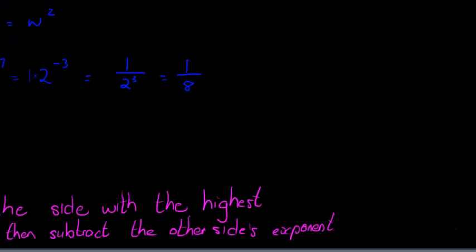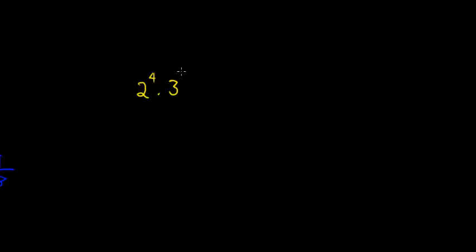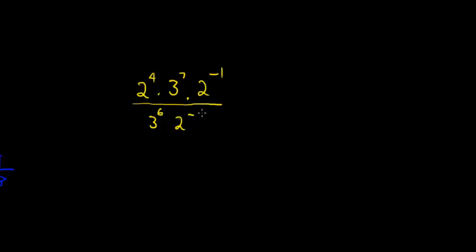Let's do one more example where we combine some things. Let's say we have 2 to the power of 4 times 3 to the power of 7 times 2 to the power of negative 1, all divided by 3 to the power of 6 and 2 to the power of negative 3.